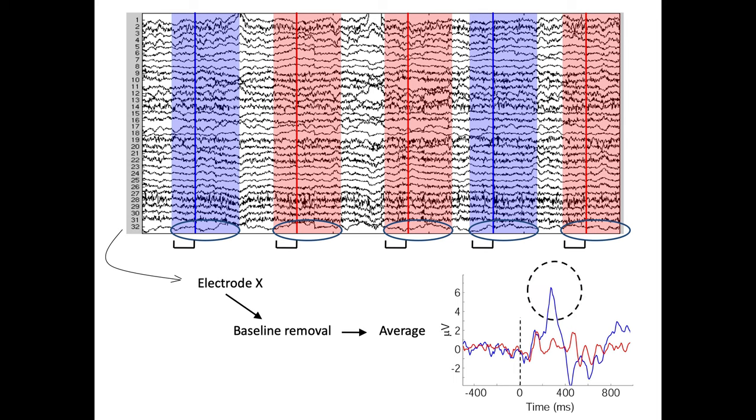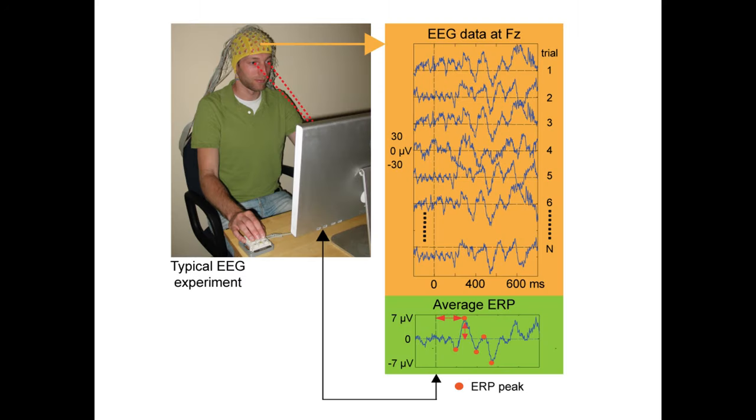Here's another example. This is different trials, trial one, two, three up to n, and then you just average the single trials and then try to interpret the latency and the height of the peak. So this is the historical average ERP approach.